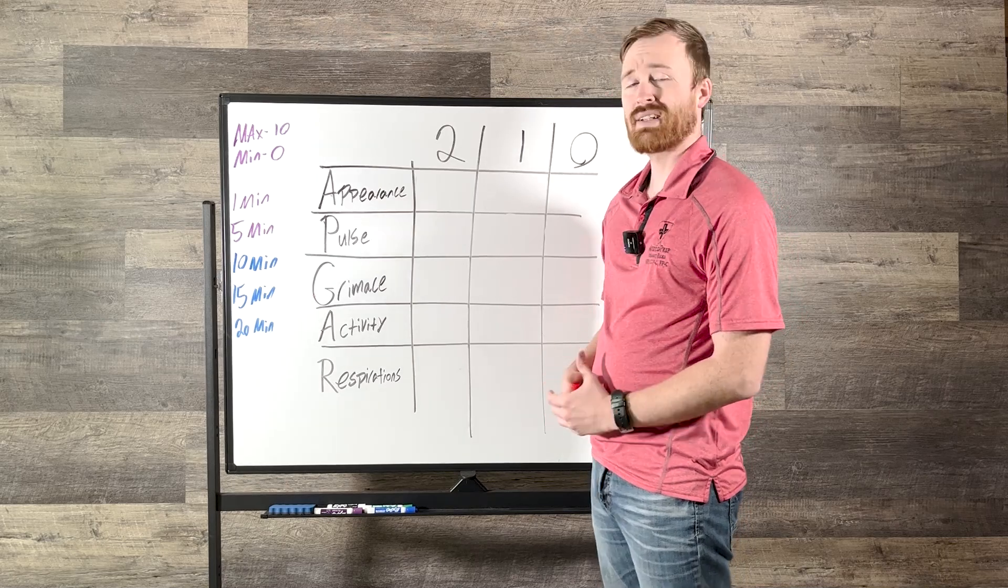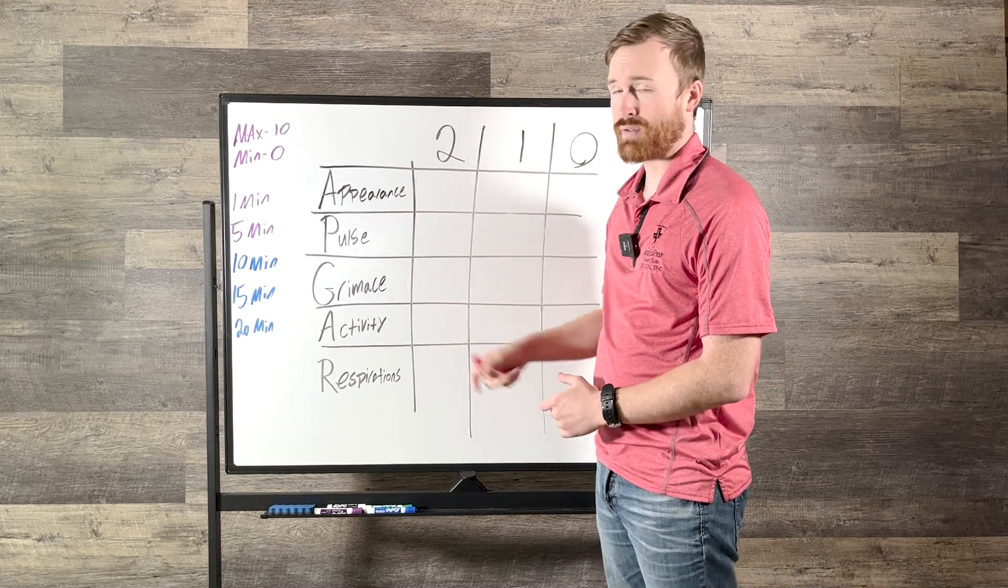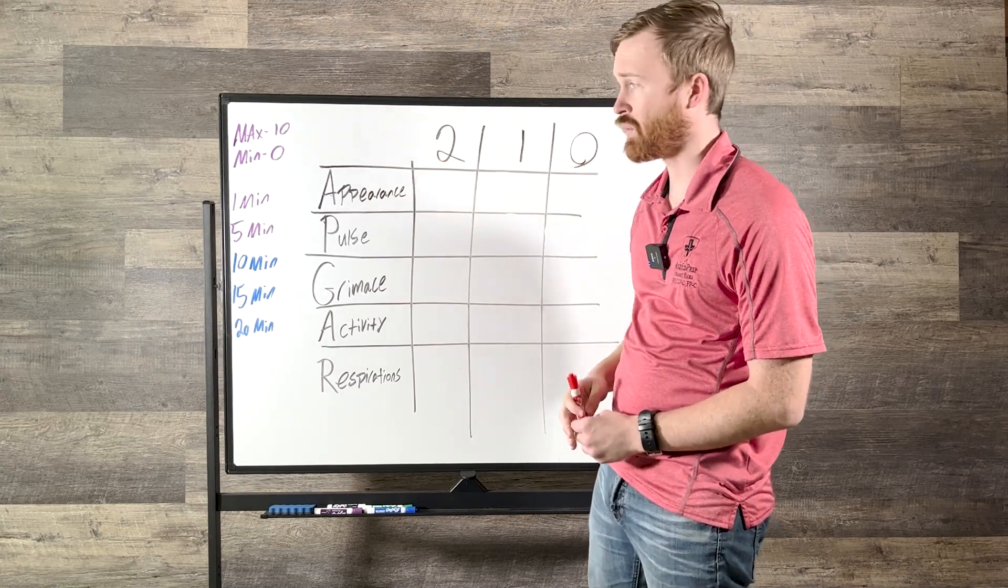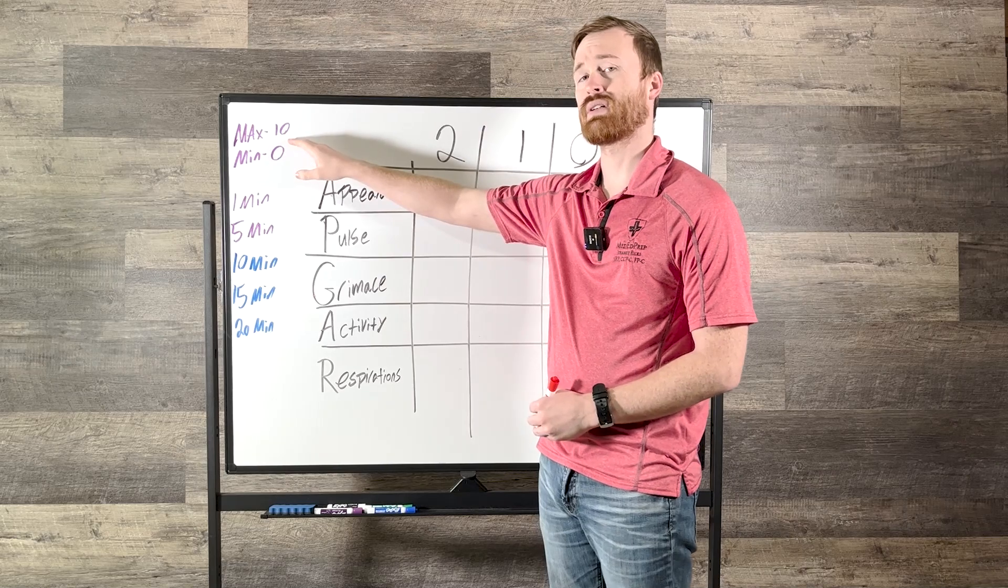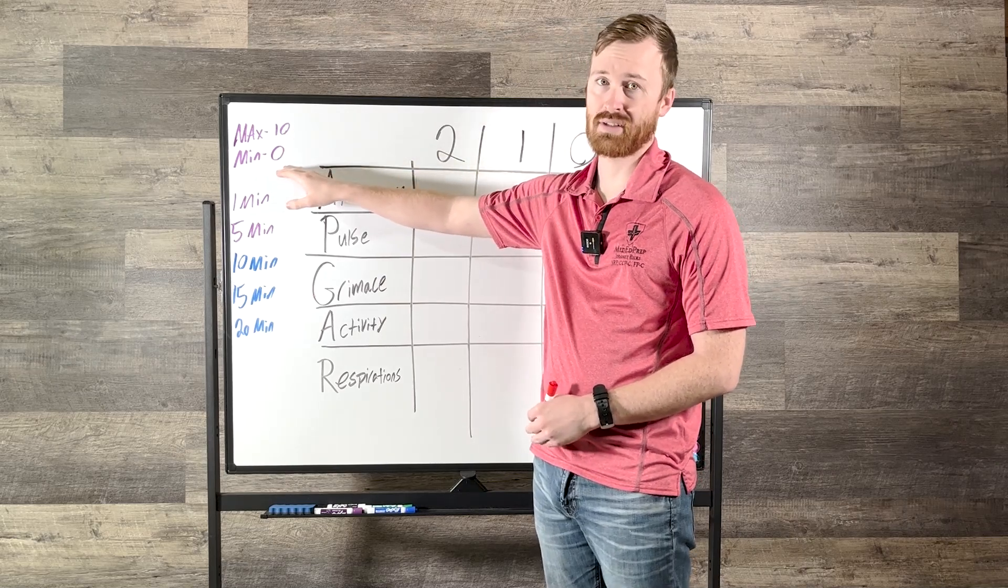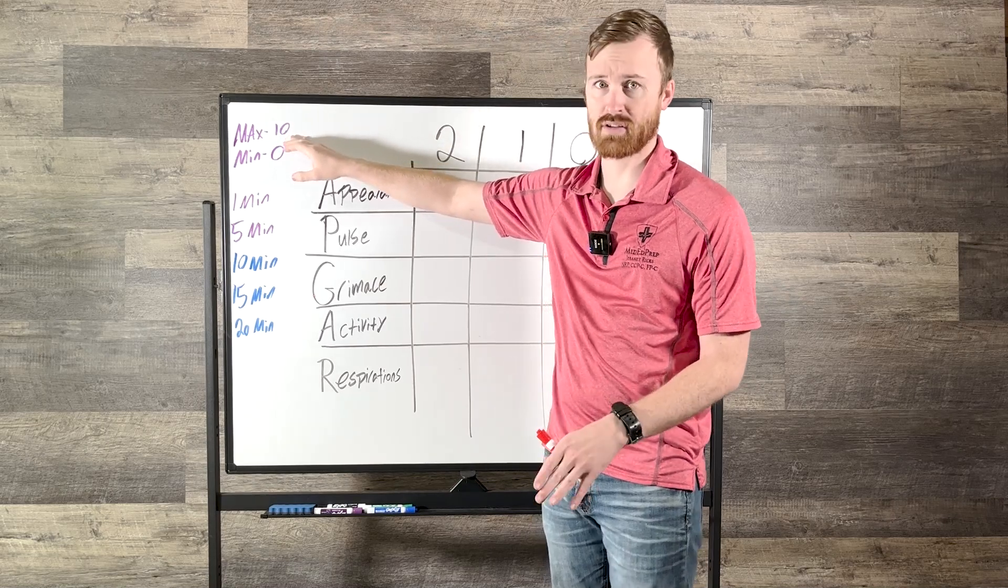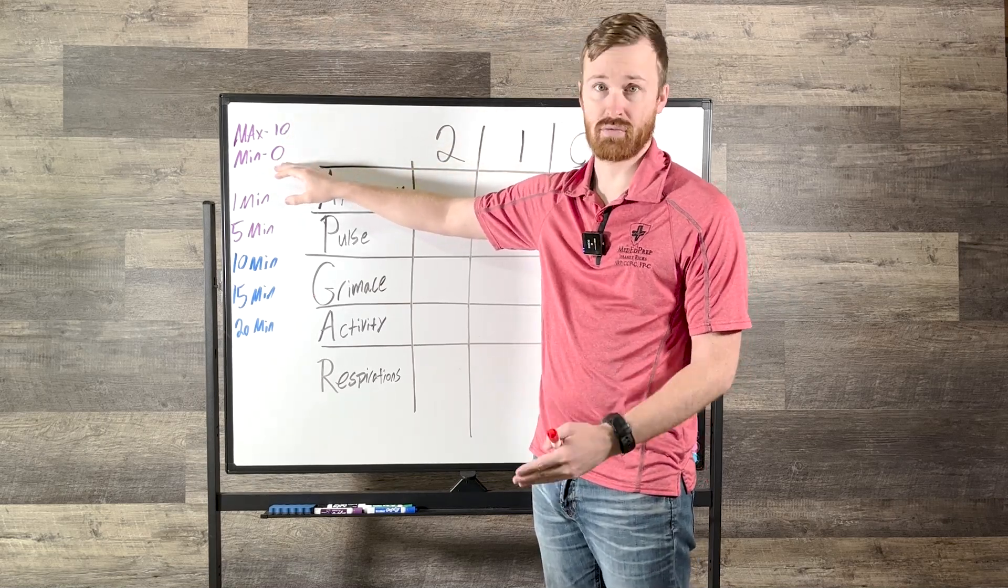The big things that you need to know about it is it's broken up into five categories, and it's got two points, one point, or zero points for each of those categories. The maximum score that you can get is 10 points. The lowest score that you can get is zero. 10 is a very, very alive baby, the most alive baby that you can possibly imagine, and zero is going to be a very dead baby.